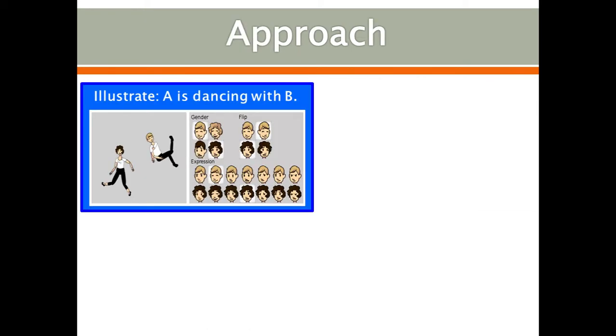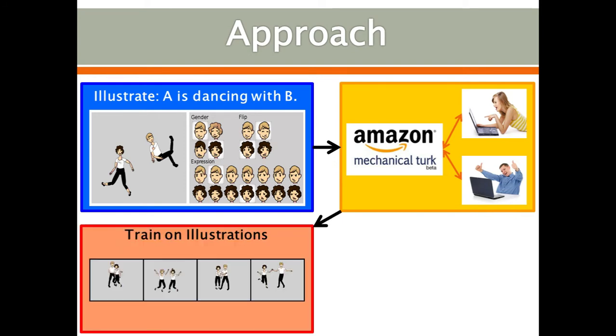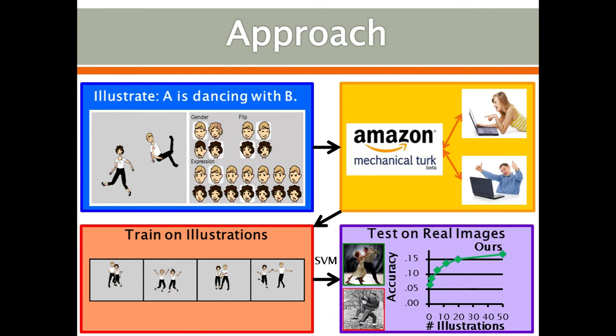We made a custom ClipR interface and had MTurk workers create illustrations depicting various interactions between two people. We train models of these interactions using just these illustrations. We then test these models on real images, beating both random and attribute baselines.